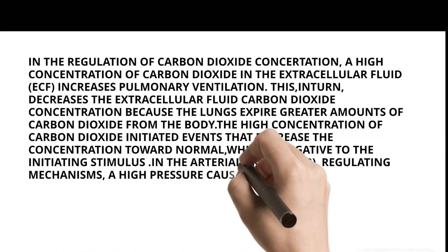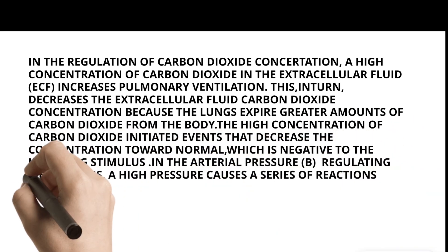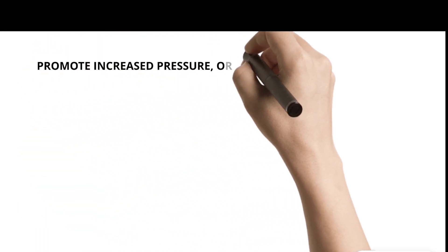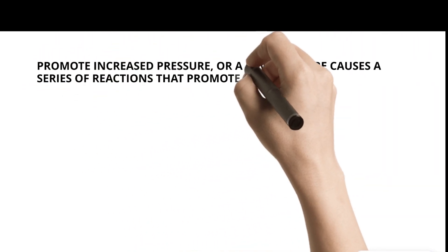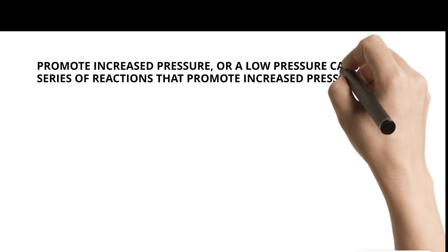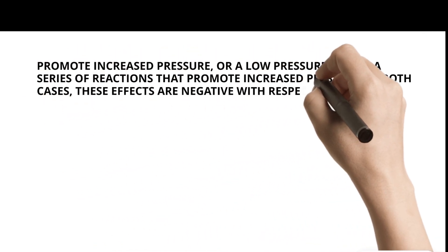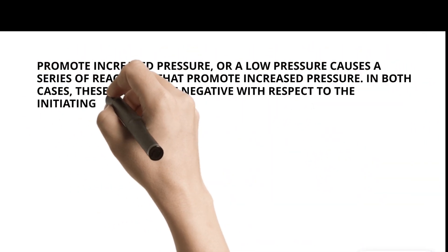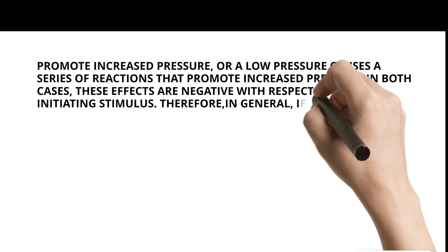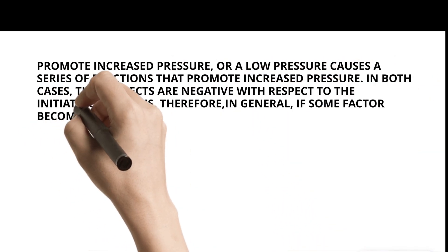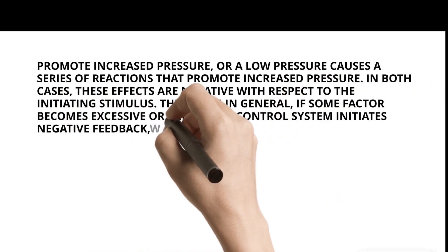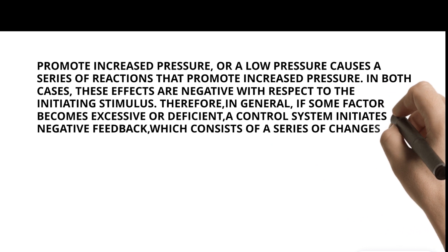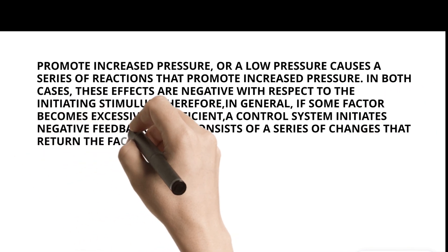In the arterial pressure regulating mechanisms, a high pressure causes a series of reactions that reduce pressure, or a low pressure causes a series of reactions that promote increased pressure. In both cases, these effects are negative with respect to the initiating stimulus. Therefore, in general, if some factor becomes excessive or deficient, a control system initiates negative feedback, which consists of a series of changes that return the factor toward a certain mean value, thus maintaining homeostasis.